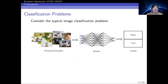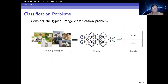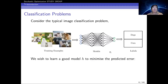Here is a typical image classification problem in machine learning, where we have a bunch of images of dogs and cats. Machine learning aims to learn hierarchical representations from these images to construct a model that can classify or distinguish which images are cats and which are dogs. We wish to learn a model that has a very good prediction error for these given images.